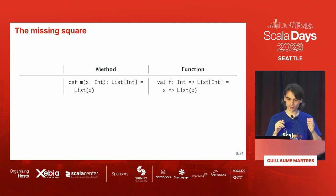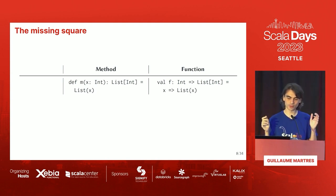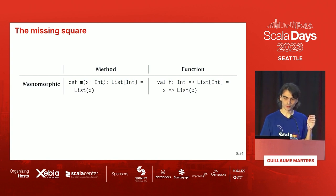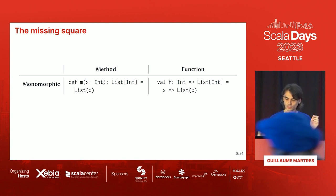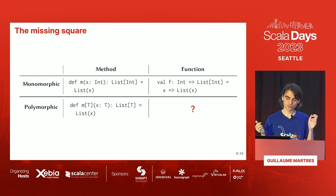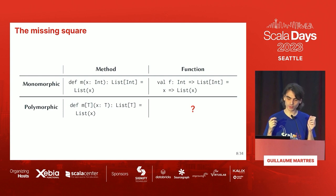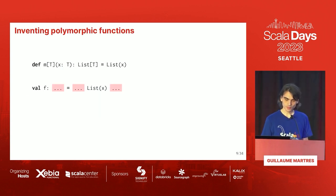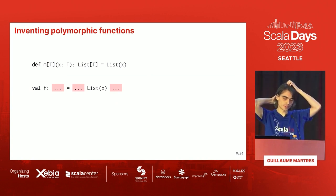Now we're going to talk about polymorphism. To recap: M is a method that takes an X of type int and gives you back a list of ints, and F is a function that does the same thing. Both of these are monomorphic because they don't take any type parameters. We can also define polymorphic methods — here M takes any type T, then takes a value of type T and returns a list of T. What we're interested in today is the missing square on the bottom right: what if I wanted a function that could take a type parameter T and give us back a value of type list of T? We want to find some syntax and semantics so that F here behaves like that polymorphic method M.